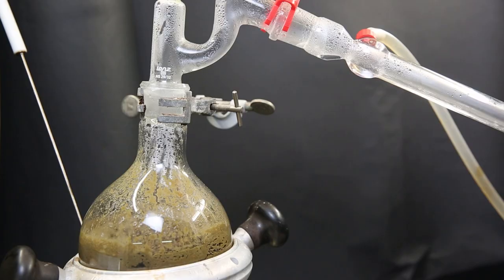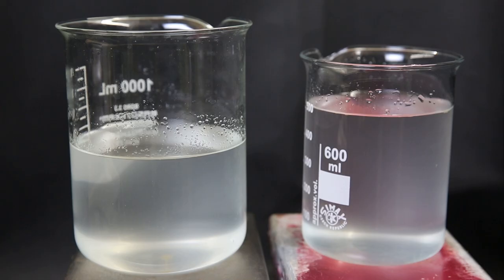After a while, the mixture started to boil. And I kept adding water until I collected about 1 liter of distillate. Now, this distillate should contain some essential oil. Since it is quite a large volume, it won't separate out easily. So to get it out, I can extract it with some hexane.